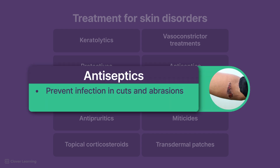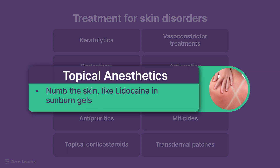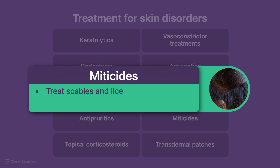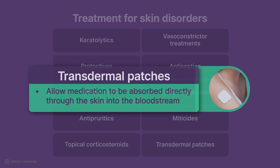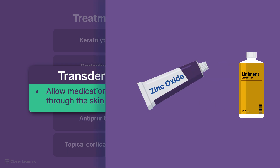Antiseptics prevent infection in cuts and abrasions. Topical anesthetics numb the skin, like lidocaine and sunburn gels. Miticides treat scabies and lice. Transdermal patches allow medication to be absorbed directly through the skin into the bloodstream. Transdermal patches are covered in a separate lesson.